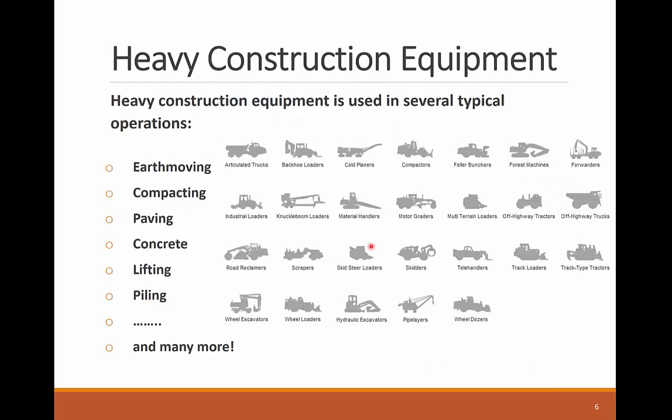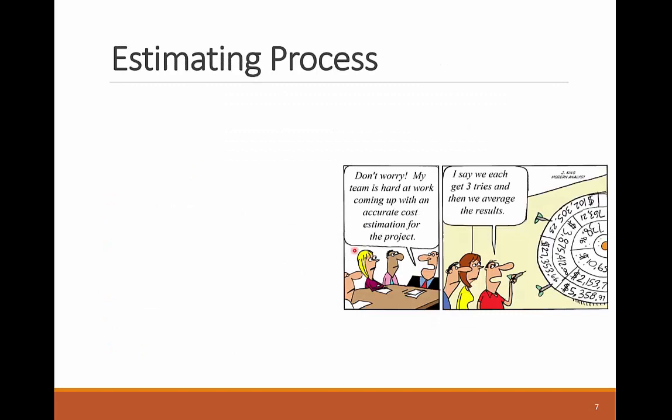Heavy construction equipment is used in typical operations that we will cover in this course, like earth moving, compaction, paving, lifting, piling, and many more. This figure shows some examples of heavy equipment most relevant to earthwork and earth moving, like trucks, loaders, compactors, graders, excavators, and dozers.